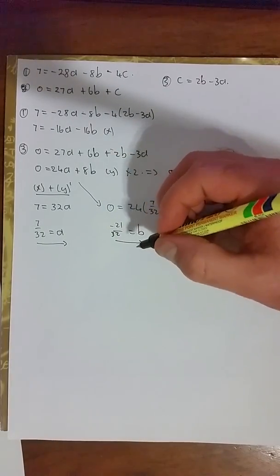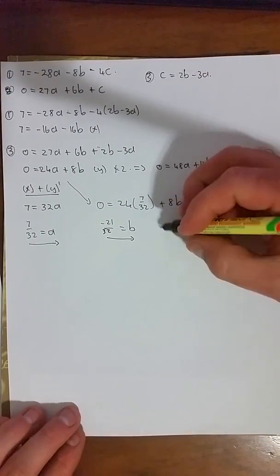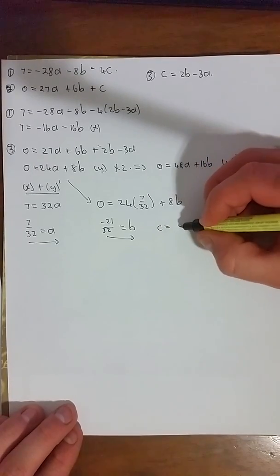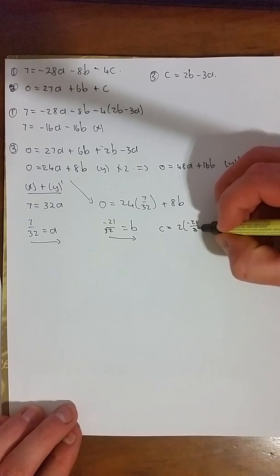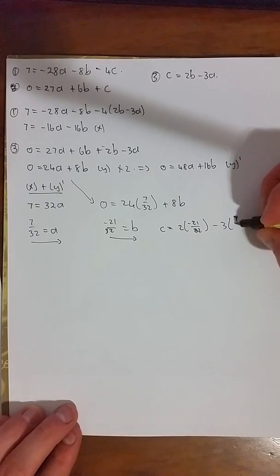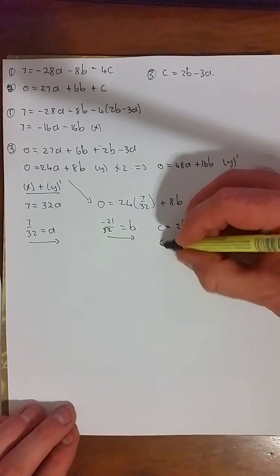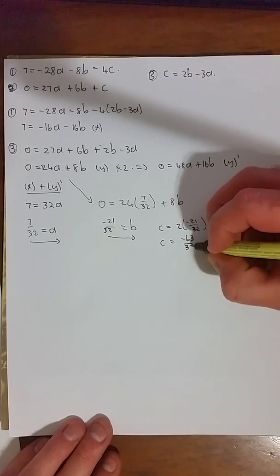And now, for c, we can say, well, c = 2b - 3a. So c = 2 × b - 3 × a. Solving for that, we get that c = -63/32.